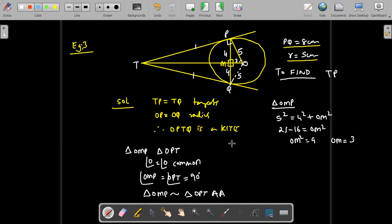So the reasons you will have to write, and since two angles are equal I can say the triangles OMP and OPT are similar by AA. Now we know that if triangles are similar the sides are in proportion. Therefore we can say that OM by OP, if I take OM the corresponding side will be OP, is equal to, I want to find TP right? So I want to take, so I will take MP by PT, by corresponding parts of similar triangles are in proportion.